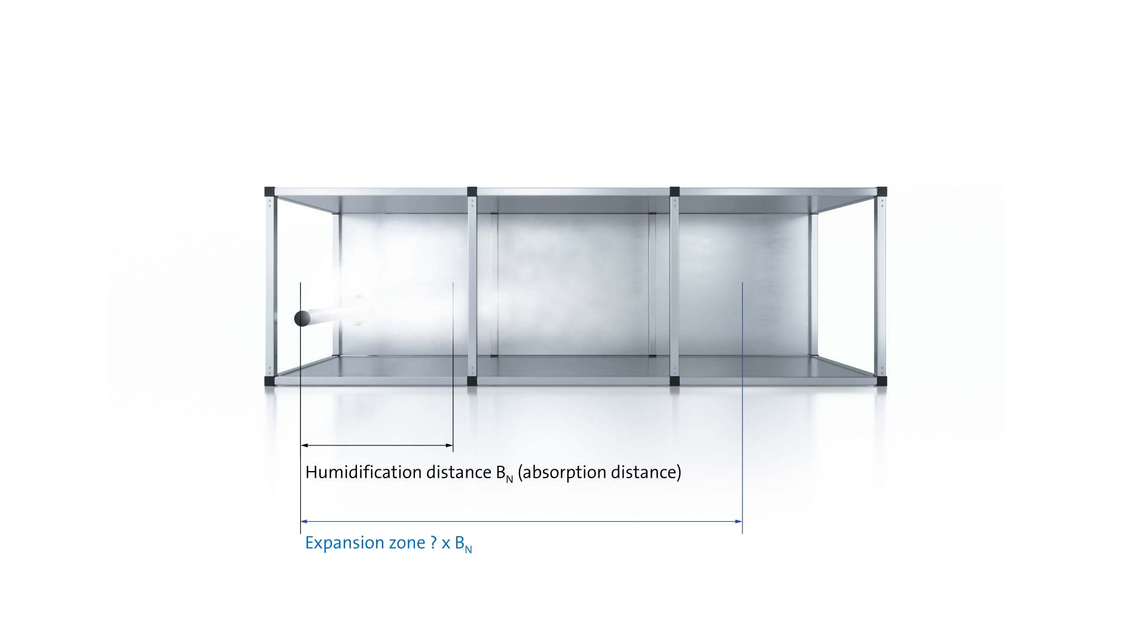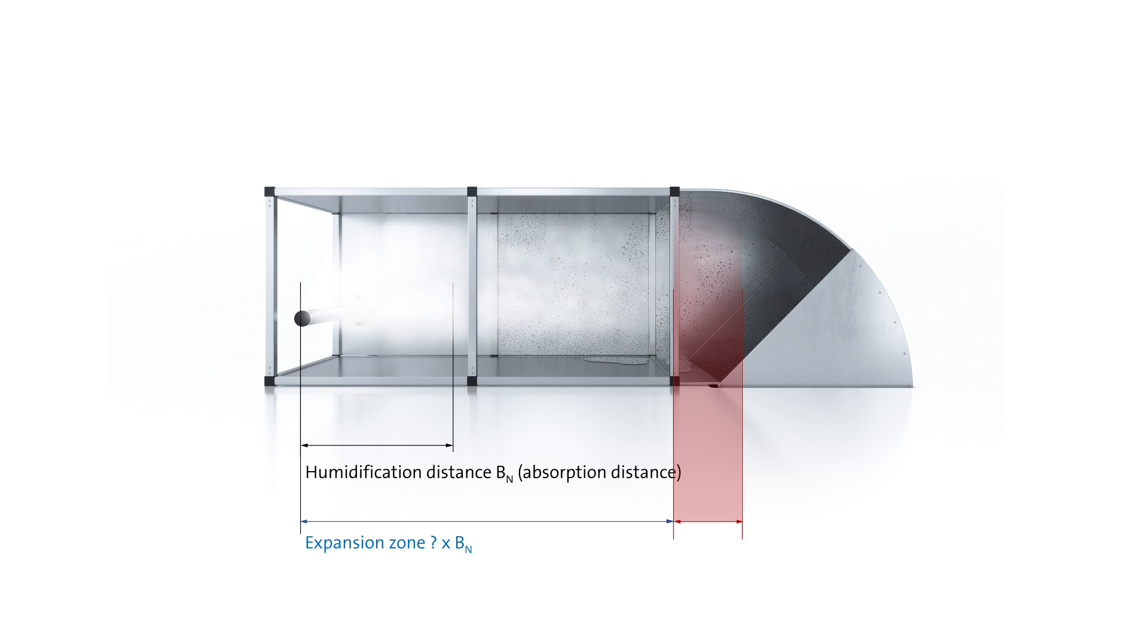If the required distance is not maintained, condensation may be produced with wet spots forming on duct walls, duct branches, on fans, or in filters. This means that the hygiene of the system is no longer ensured and moist hotbeds can form on which bacteria, germs, or mould can thrive. The functioning of the system may also be impaired.